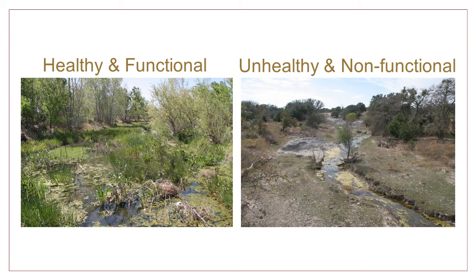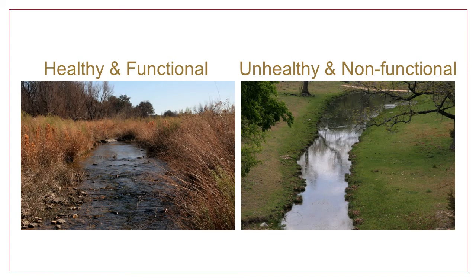But riparian areas can only perform all these functions if they are healthy. As we discussed in Lesson 1, many well-meaning land managers unintentionally damage riparian areas, reducing their ability to function. It can be tricky to know whether your riparian area is healthy because they don't all look the same. They can be covered mostly in grasses or mostly trees; they can have steep banks or gentle slopes. But what they all have in common is proper vegetation and physical structure to allow them to do their important job.